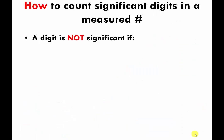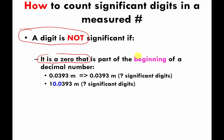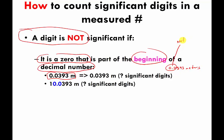Now let's look at rules for when a digit is NOT significant — this only applies to zeros, since non-zero digits are always significant. The first rule: if a zero comes at the beginning of a decimal number, it's not significant. For example, 0.0393 meters — those leading zeros are not significant. The 3, 9, and final 3 definitely are significant. So 0.0393 meters has only three significant digits.